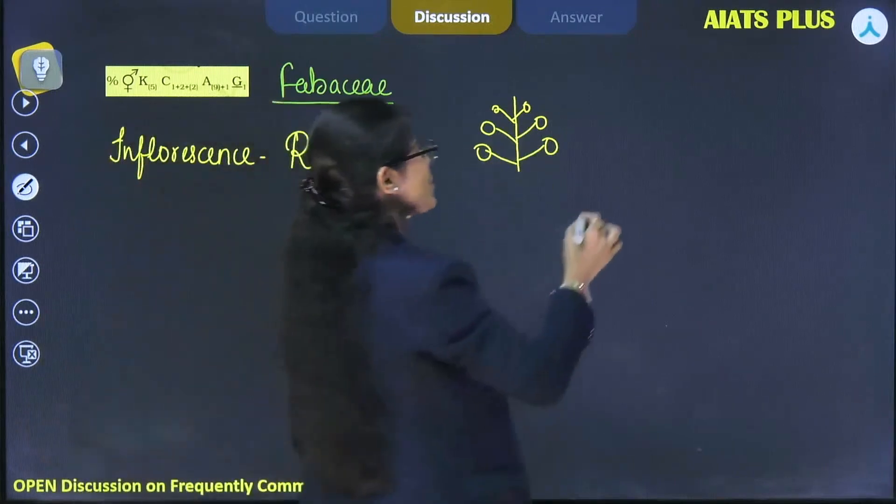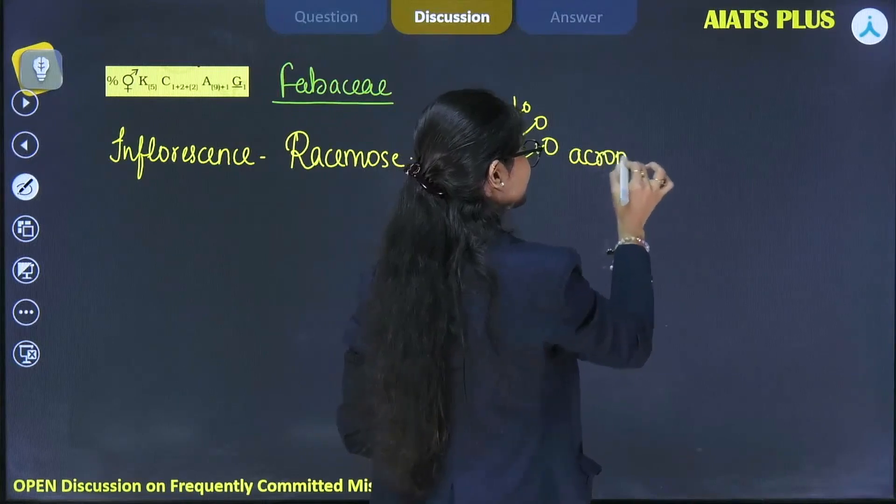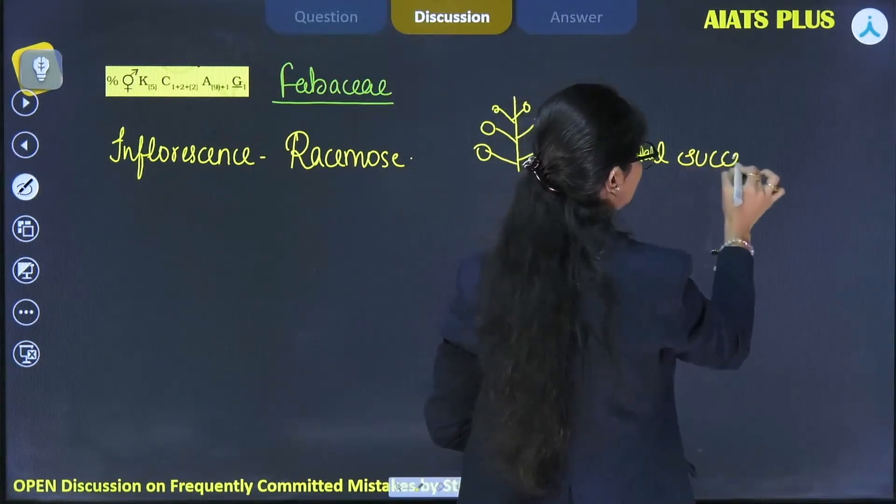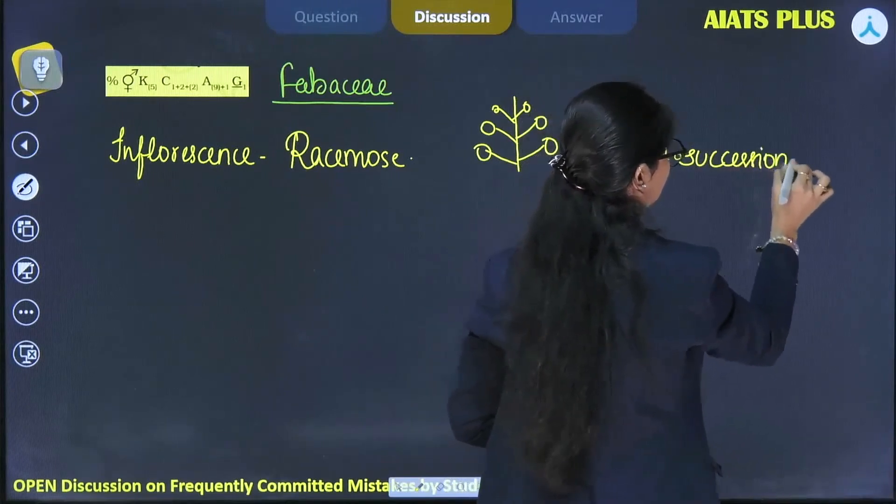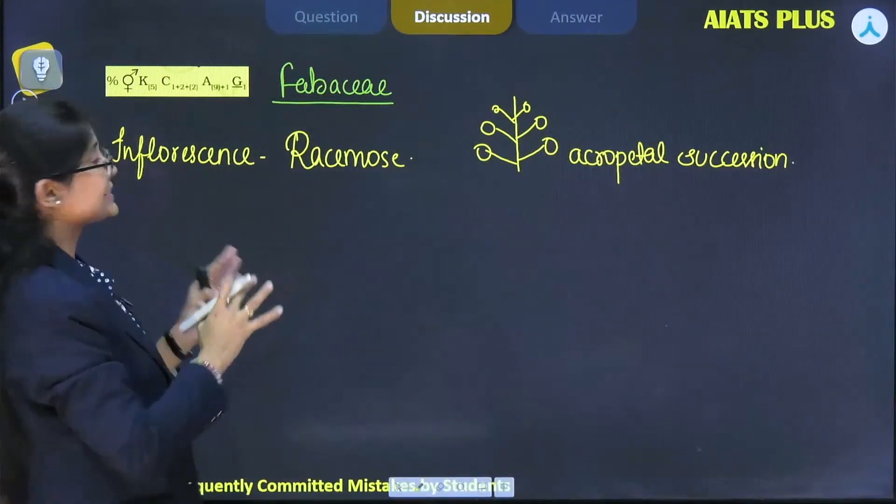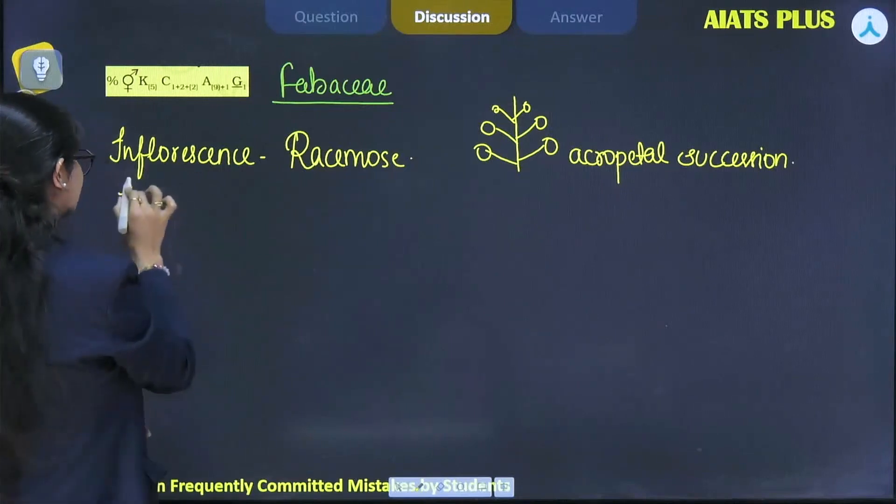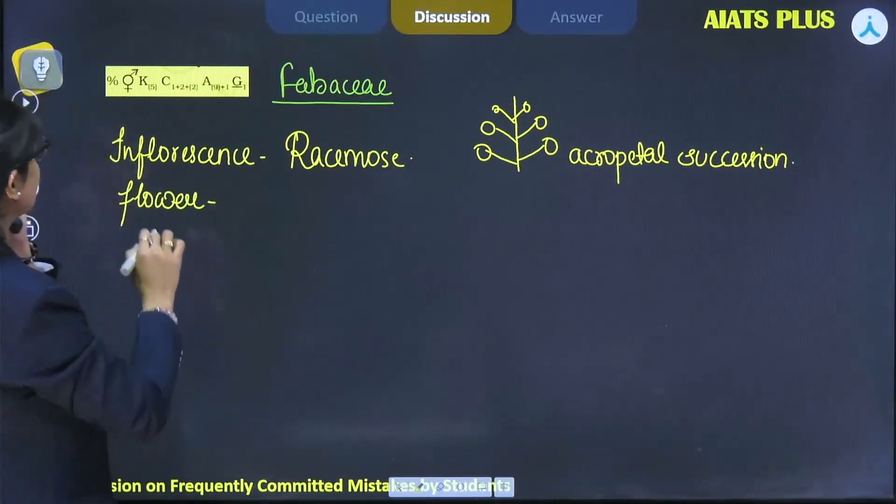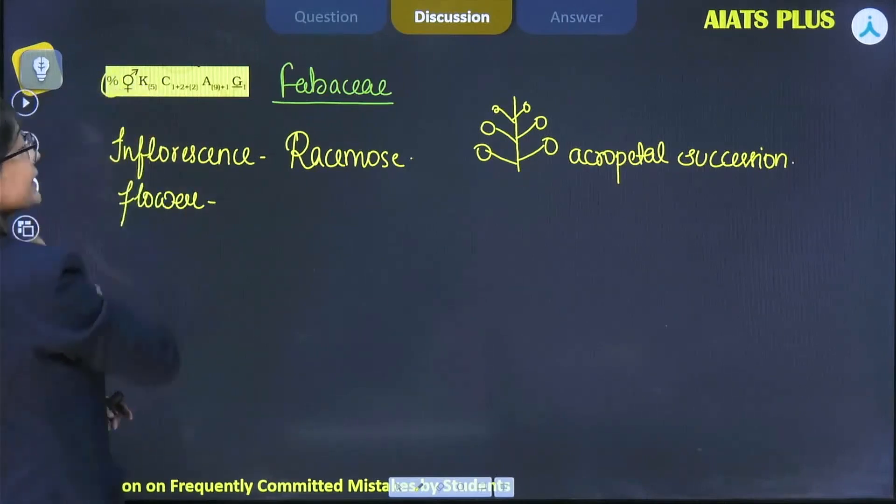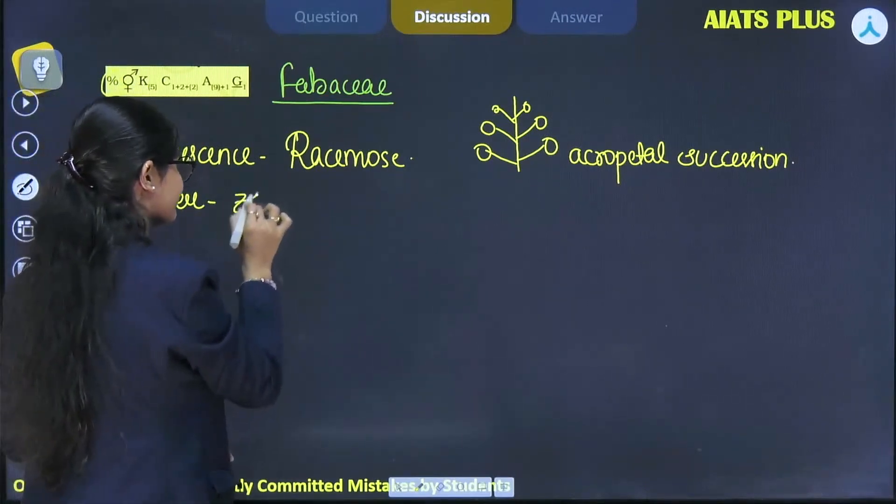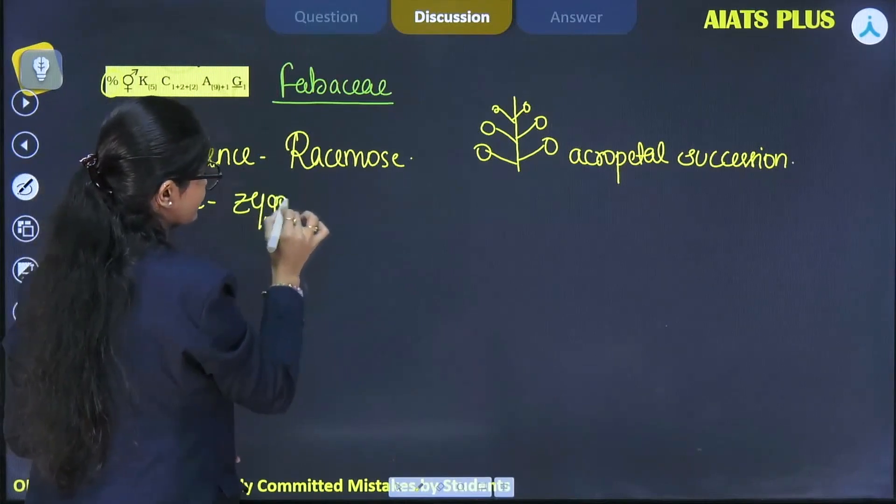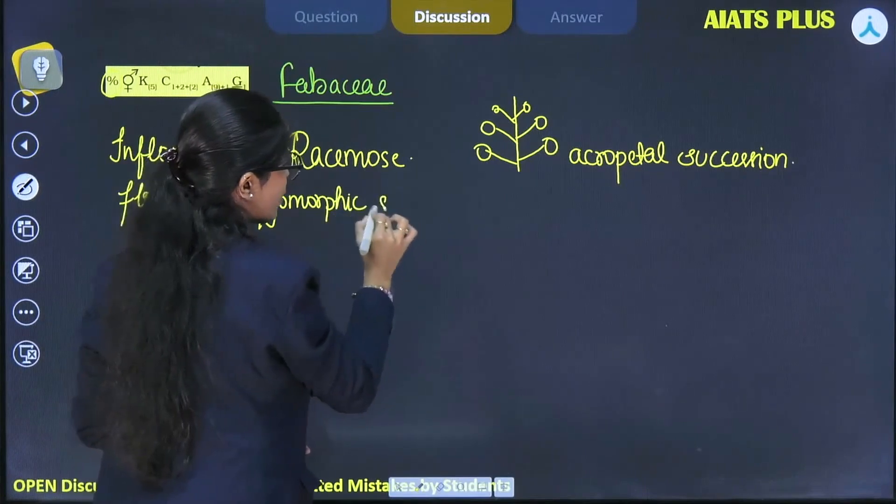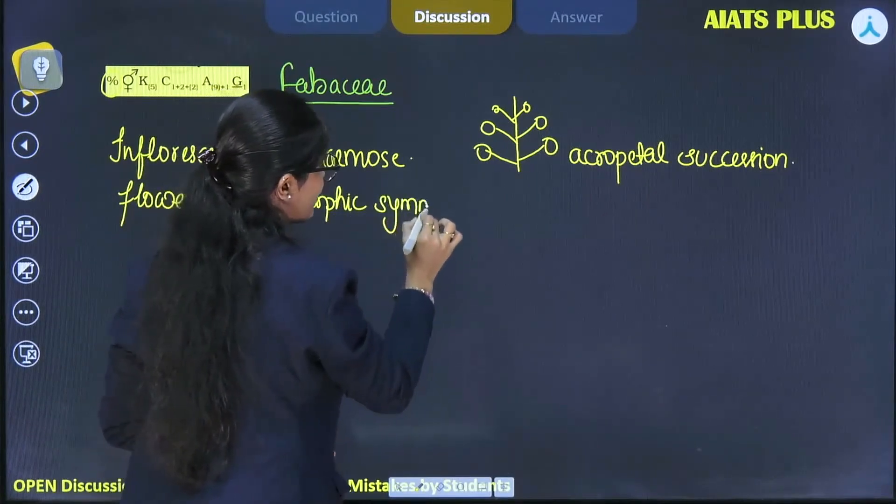Now let's see the next feature, which is flower. This sign denotes zygomorphic symmetry. What do you understand by zygomorphic symmetry?